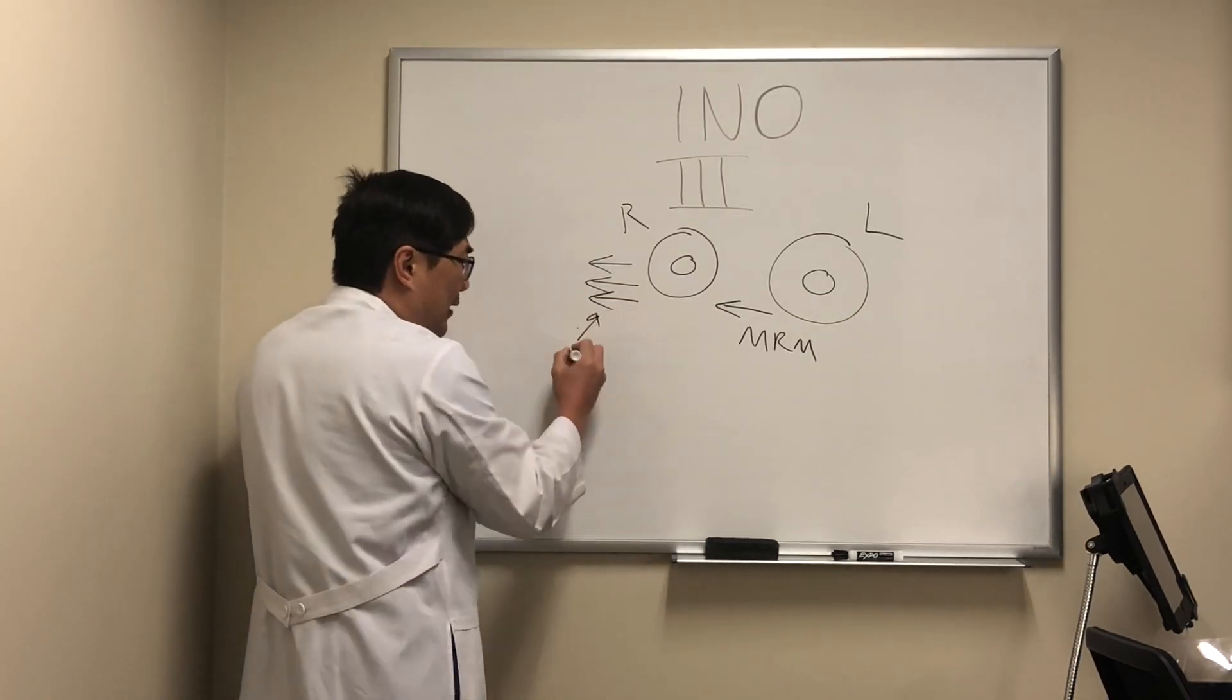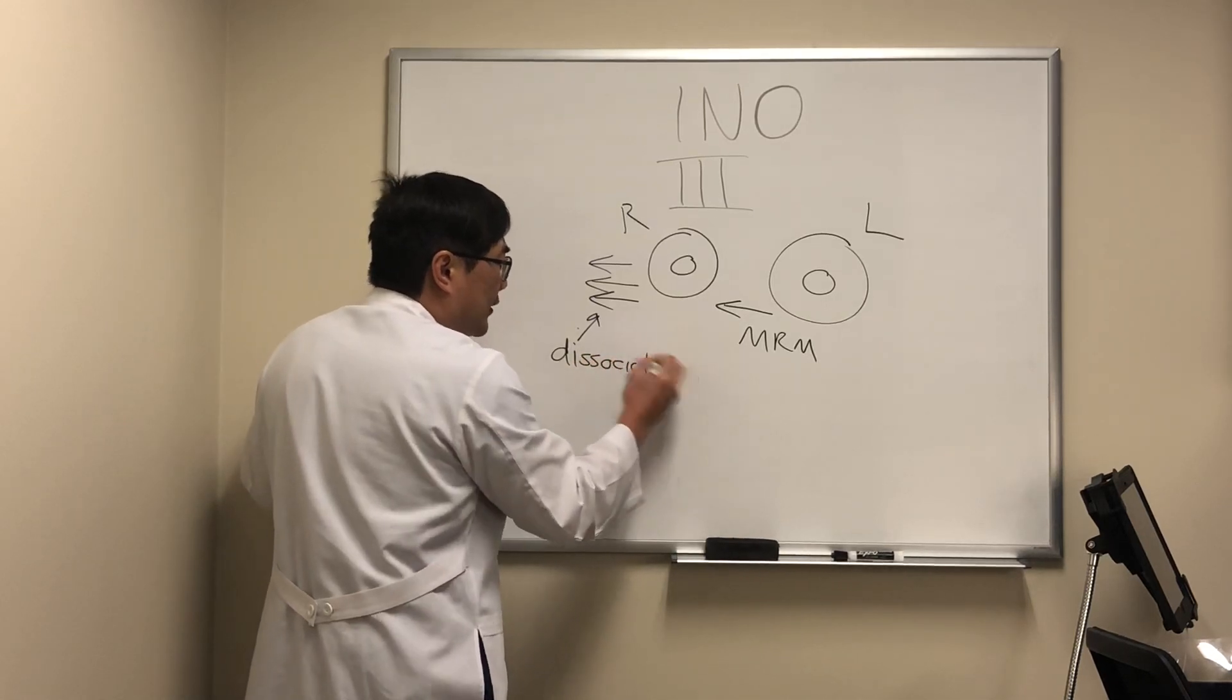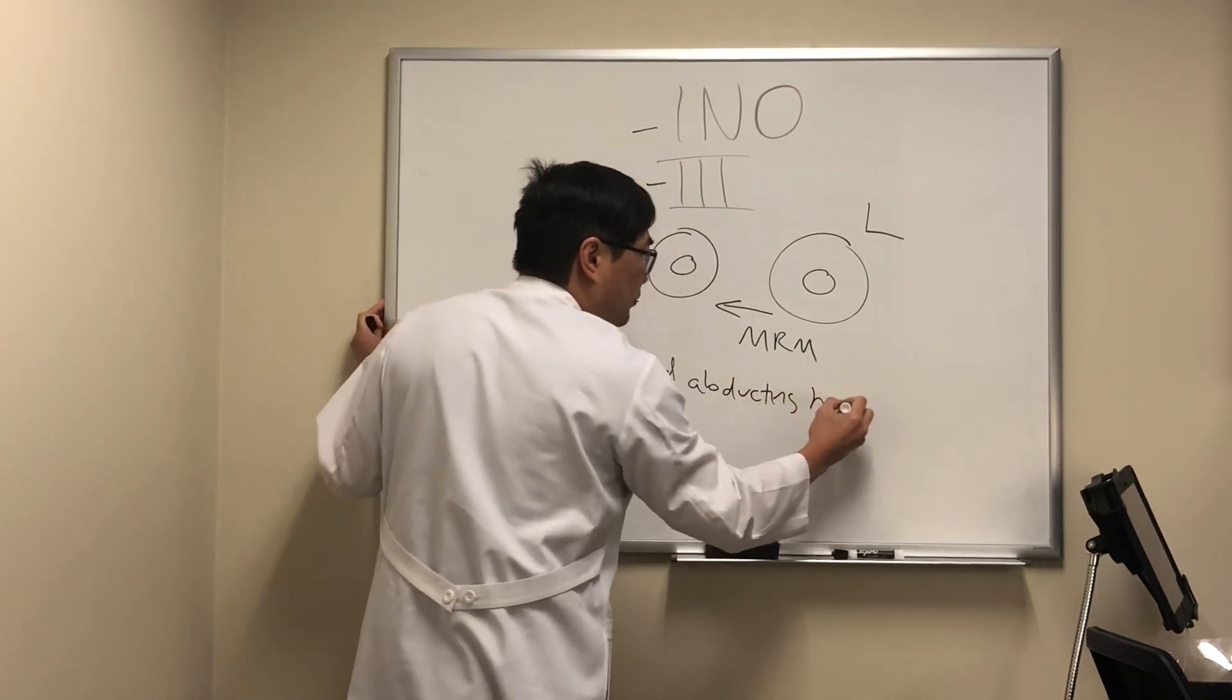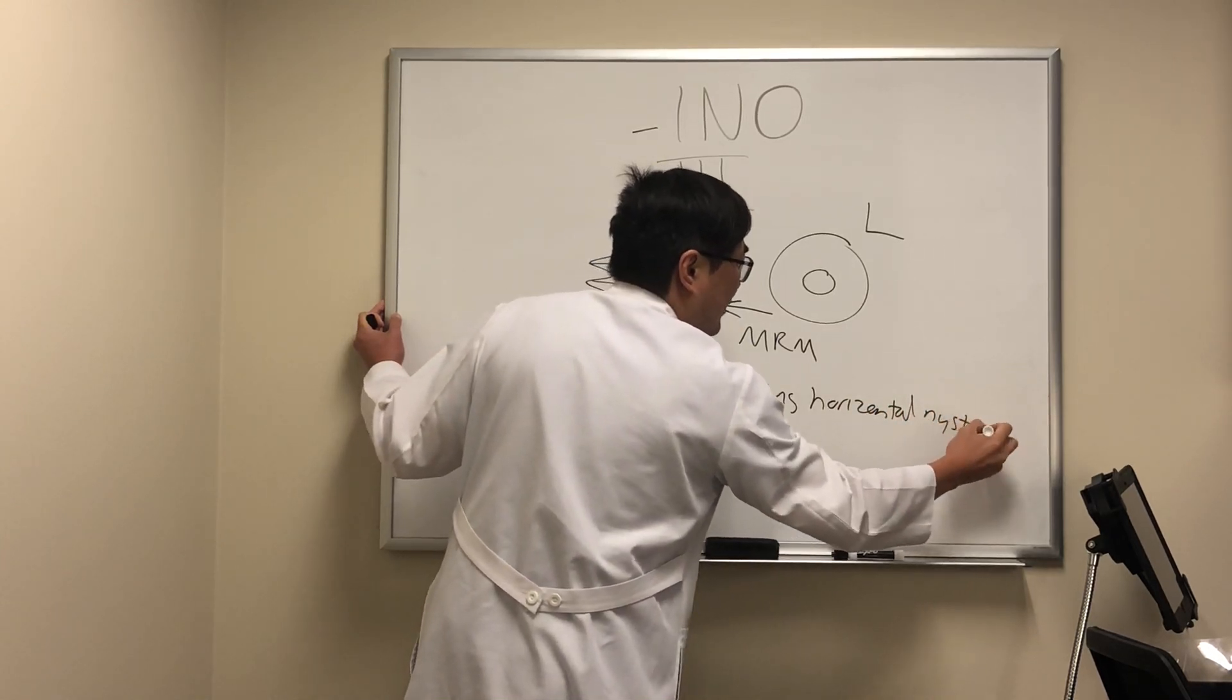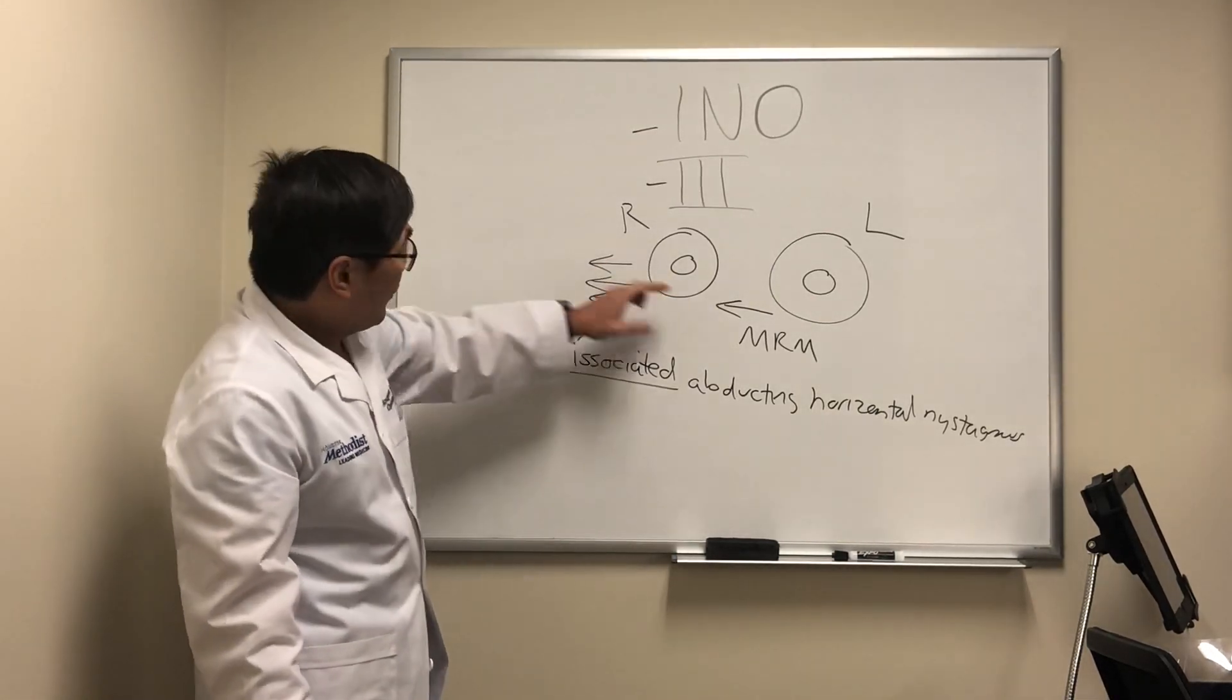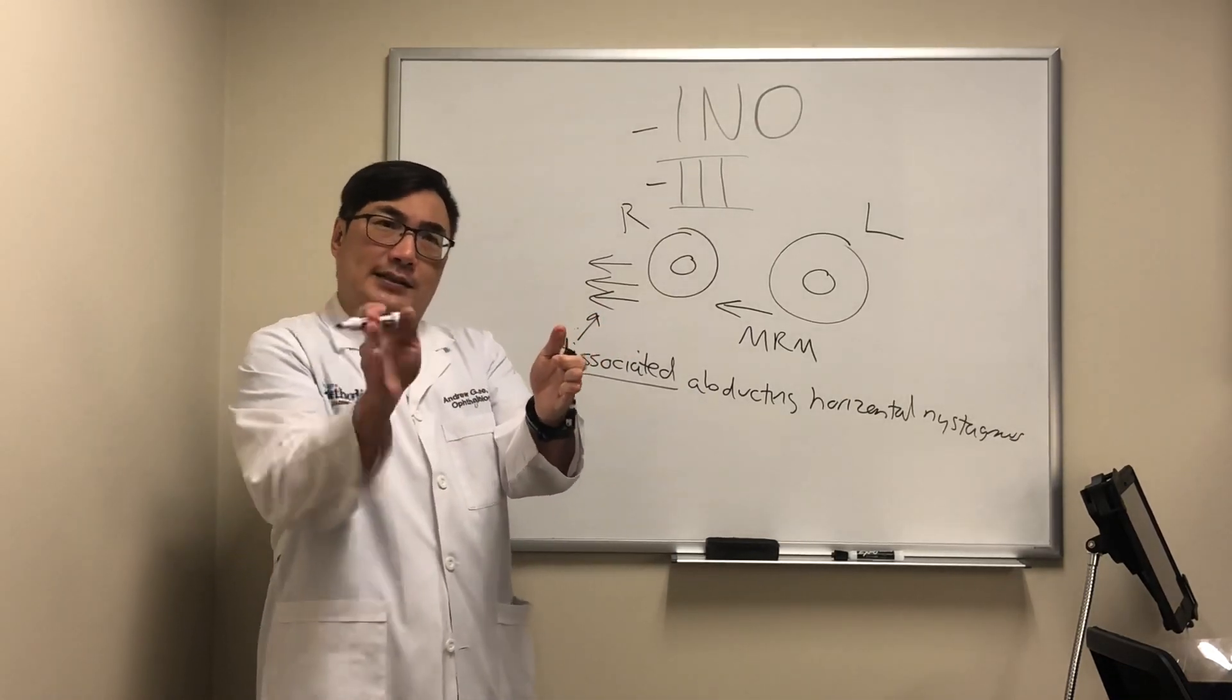So that feature right there is one of the features that we're going to be using to differentiate the INO from third nerve palsy - a dissociated abducting horizontal nystagmus that occurs on attempted gaze away from the affected medial rectus. When we're looking to the right, we're going to see an adduction deficit and an abducting nystagmus.